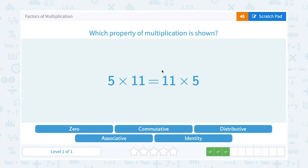5 times 11 is equal to 11 times 5. So notice, this time they changed the order of the numbers. When you change the order of the numbers, it doesn't change our answer. 5 times 11 is still going to give us the same answer as 11 times 5. That's an example of the commutative property.